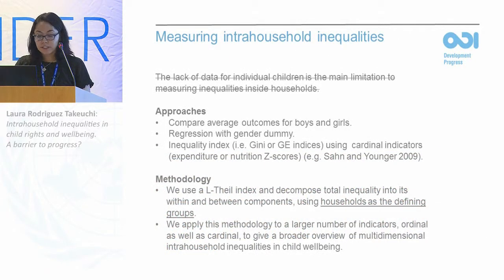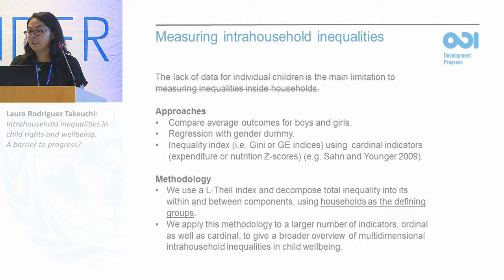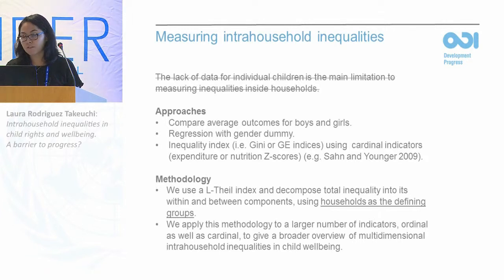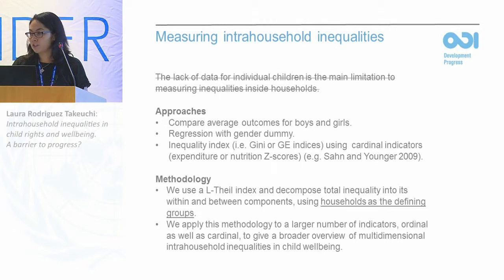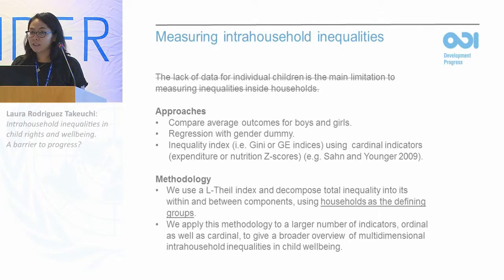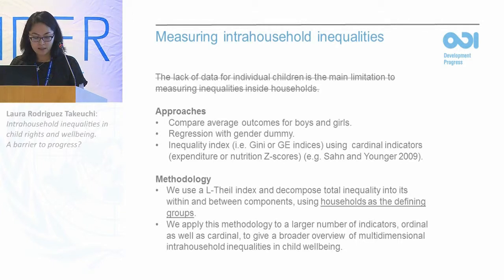The main limitation when trying to measure intra-household inequalities is the lack of data on individual children. However, international household survey programs such as the DHS and the Multiple Indicator Cluster Surveys from UNICEF have made it possible to review progress towards improvement of child well-being, the child-focused MDGs, and the convention on the rights of the child. For example, under MDG 1 we know that hunger and undernutrition in children has been reducing, although some gaps remain in regions such as South Asia. We know that over 90% of children are enrolled in primary education and that gaps between boys and girls are reducing, though interesting gaps remain — particularly within households.